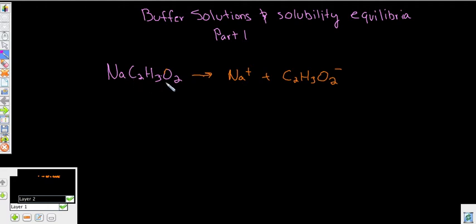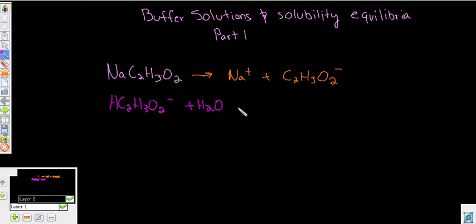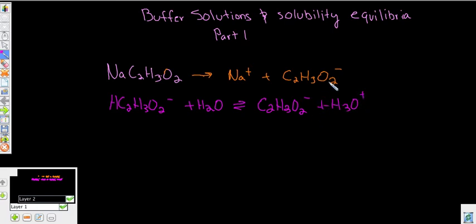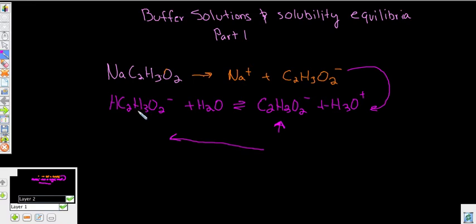What acid would pair with sodium acetate? It would be acetic acid, HC₂H₃O₂. If we take acetic acid and add it to this solution, when it goes into water it becomes the acetate ion C₂H₃O₂ and hydronium ions. Adding sodium acetate increases the amount of acetate ions, which drives the reaction to the left, creating more of the acid. This is called the common ion effect.